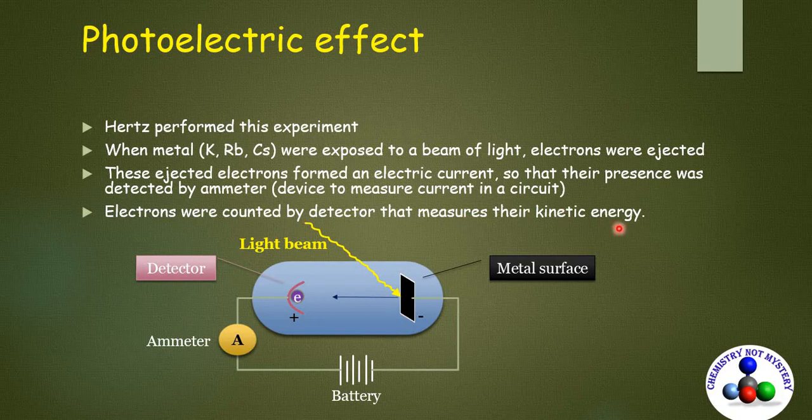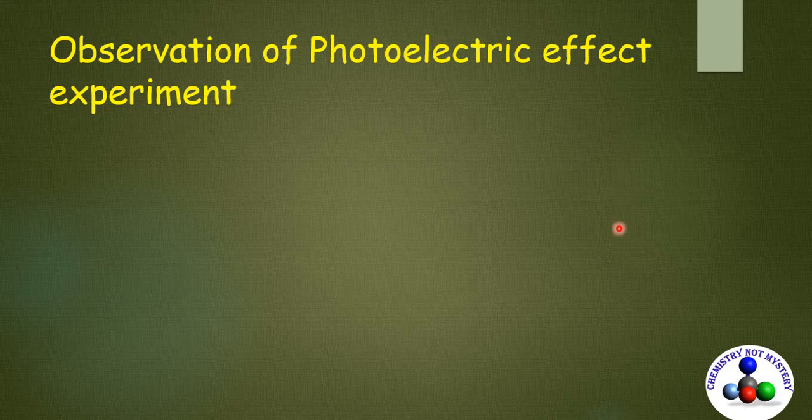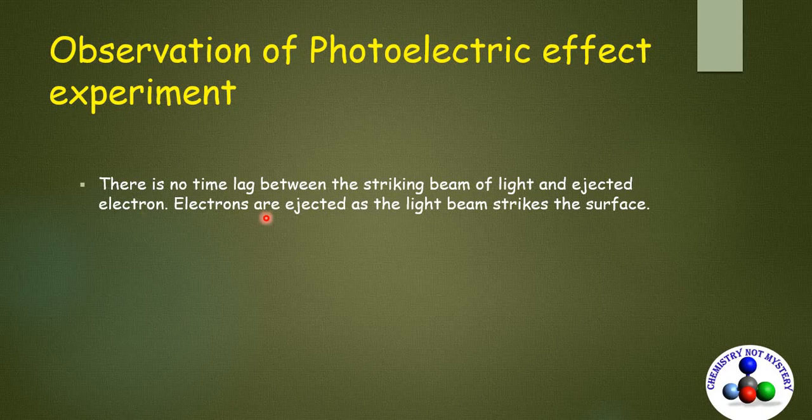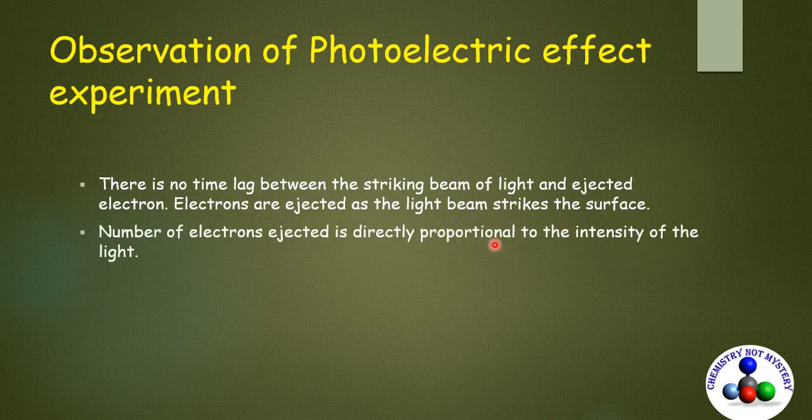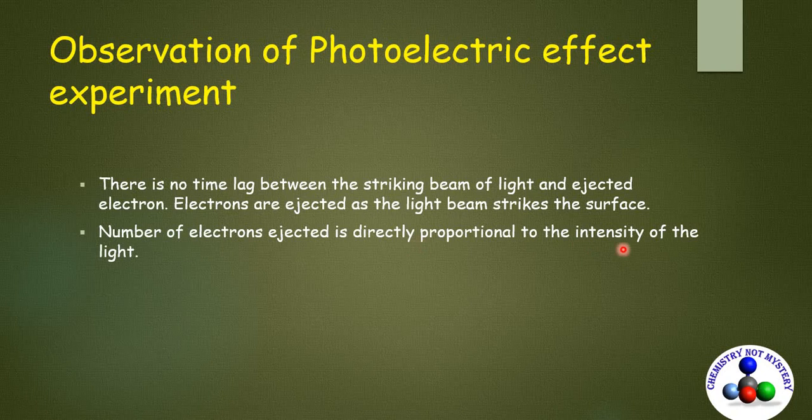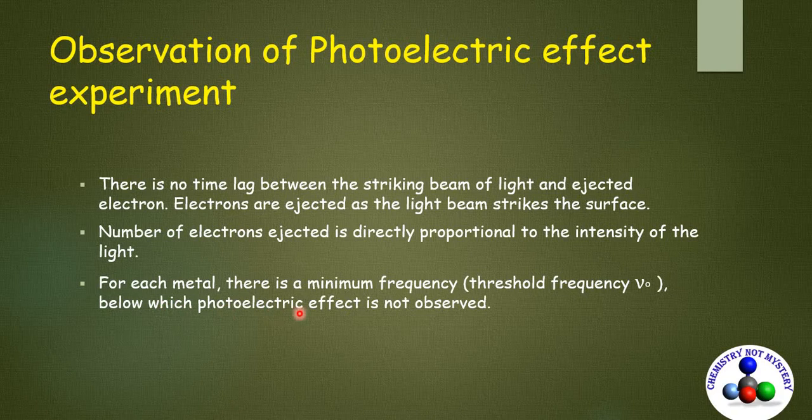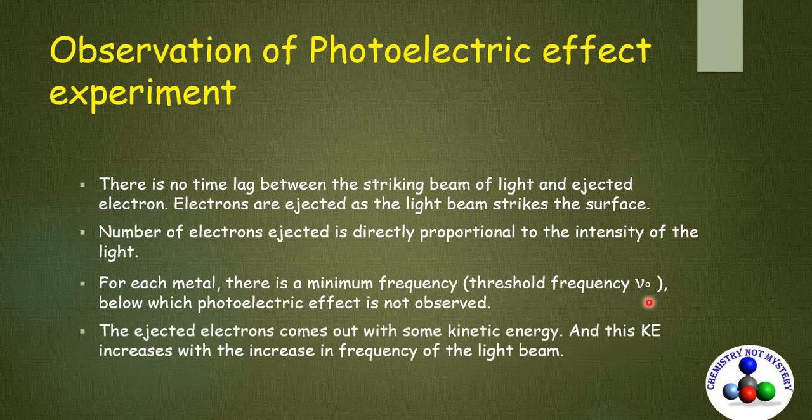Hertz listed down his observations of photoelectric effect experiment. There is no time lag between the striking beam of light and the ejected electrons. That means electrons are ejected as the light beam strikes the surface of matter. The number of electrons ejected is directly proportional to the intensity of light. For each metal there is a minimum frequency below which photoelectric effect is not observed. This minimum frequency is called threshold frequency and it is represented by ν₀.